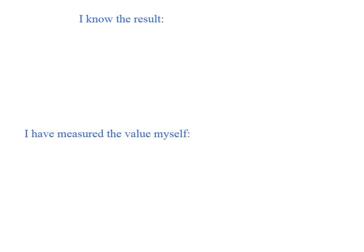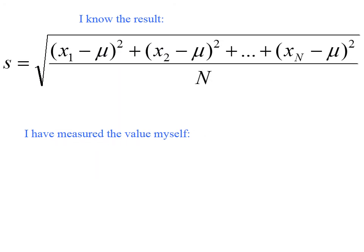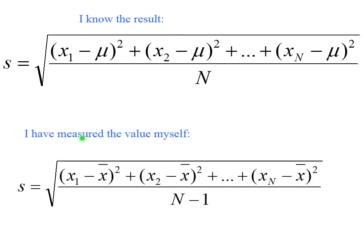If I know the result, I am calculating standard deviation using known value of result, divided by n, number of measurements. If I measure the value myself, very similar formula, but instead of known value, I put my average and divide by n minus 1. N minus 1, of course, is smaller than n. And this number is larger than this number. I know less. Uncertainty is larger.